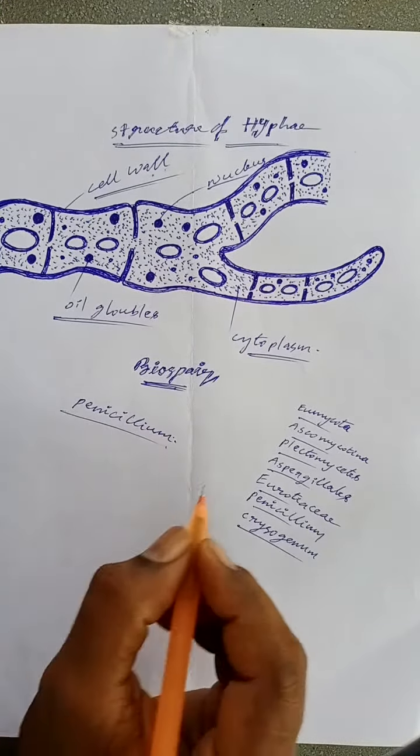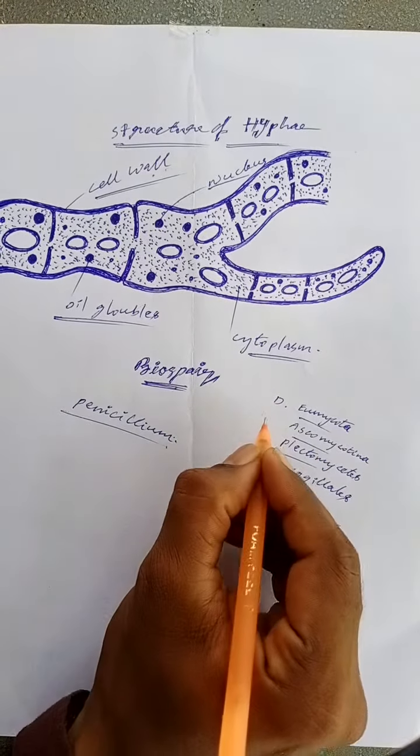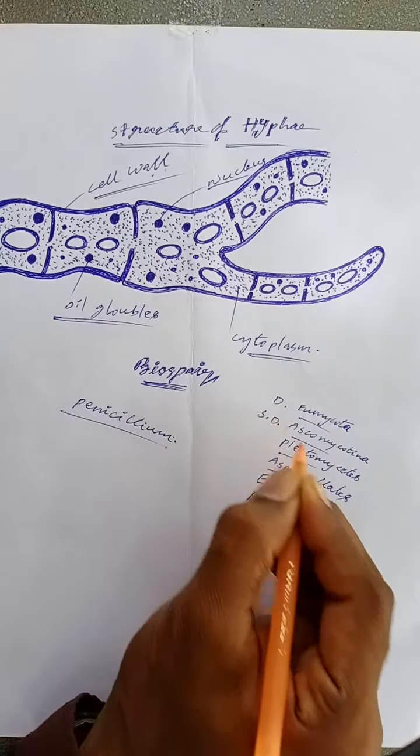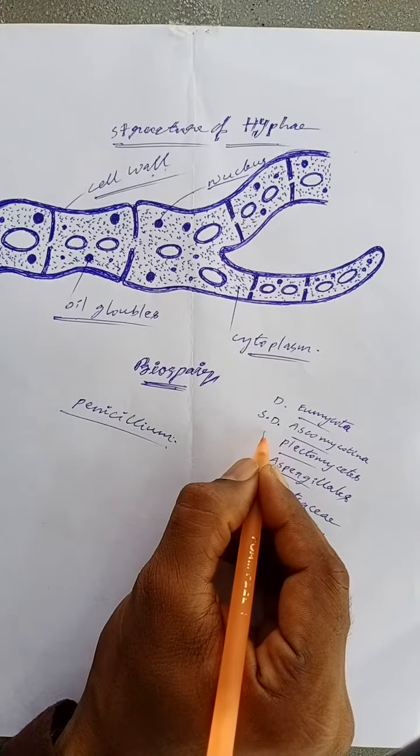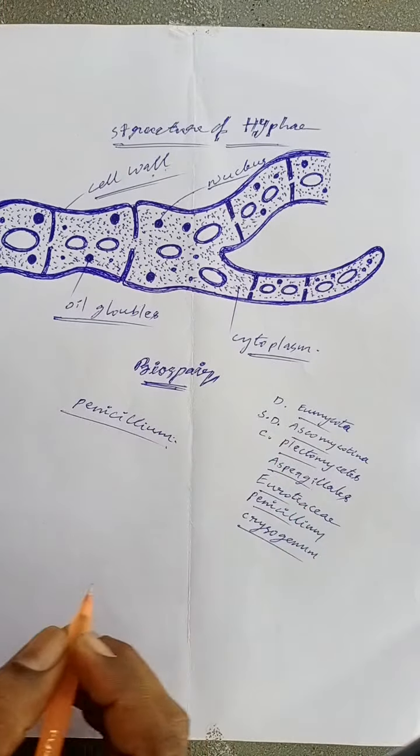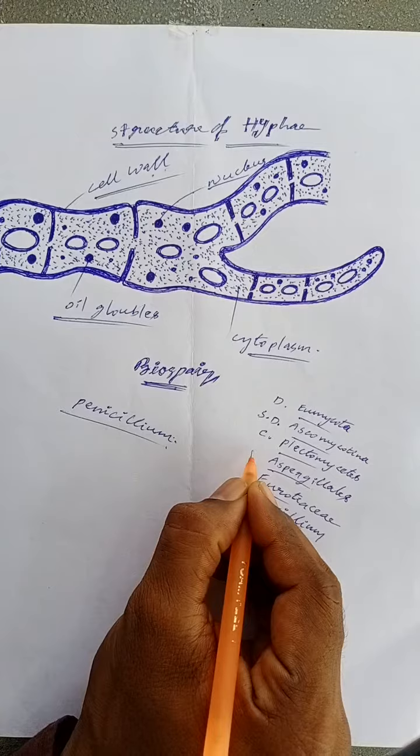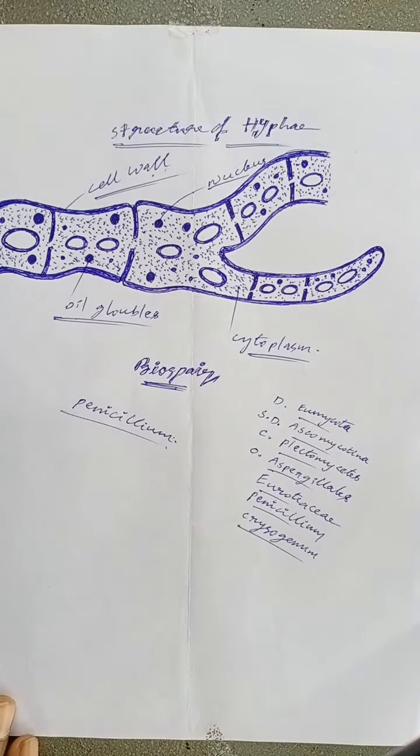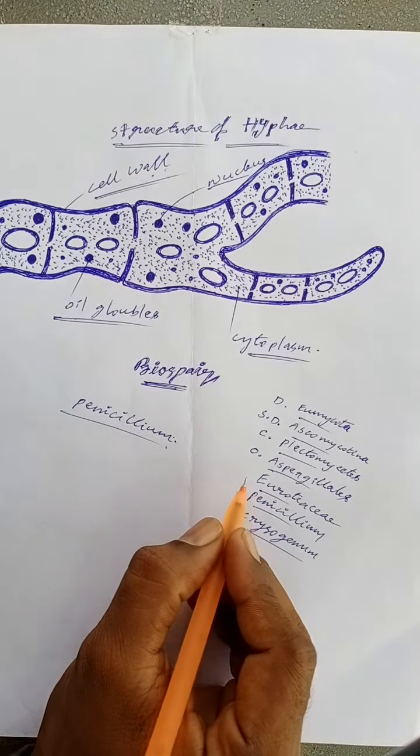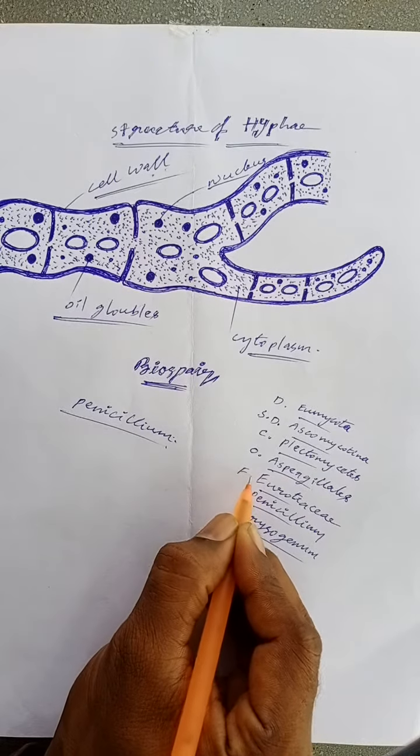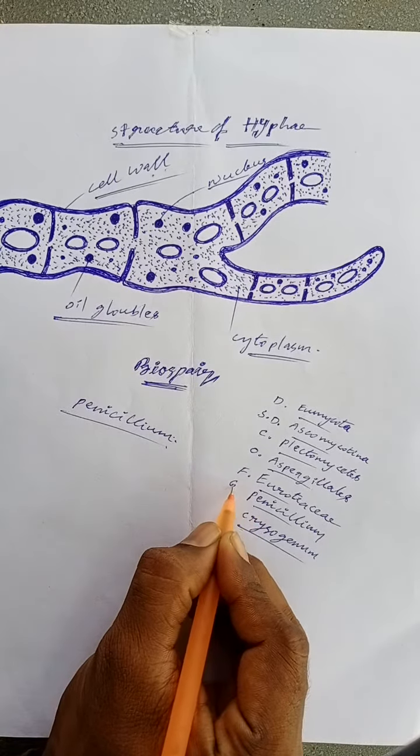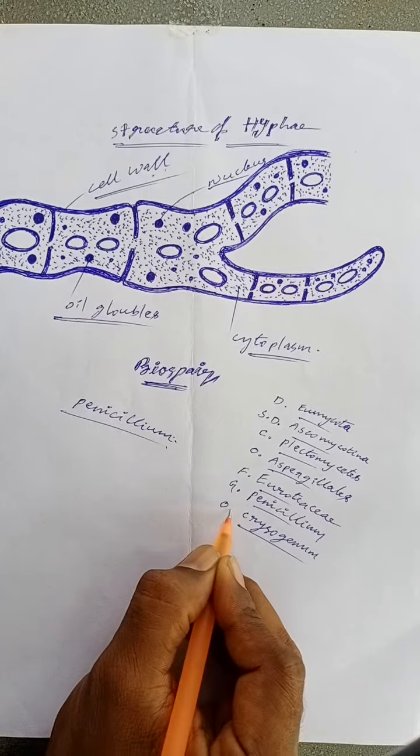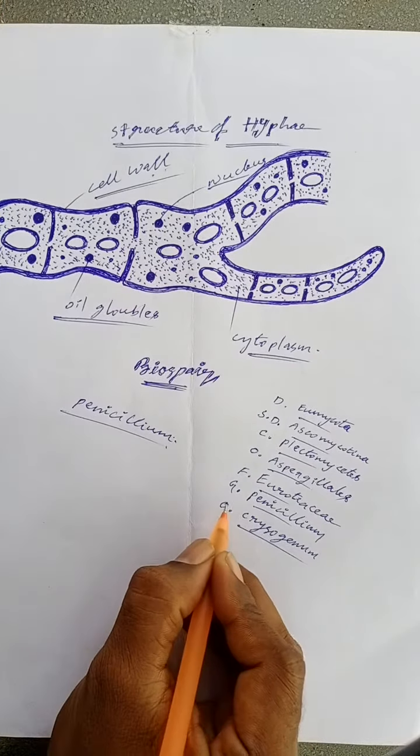division Eumycota, subdivision Ascomycotina, class Plectomycetes, order Eurotiales also called Aspergillales. It belongs to family Eurotiaceae, genus Penicillium, and species chrysogenum.